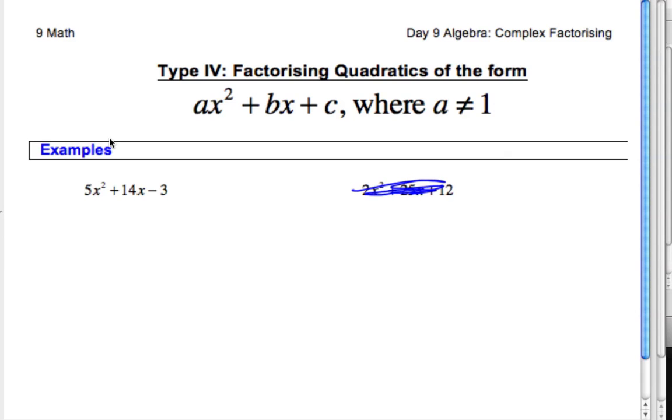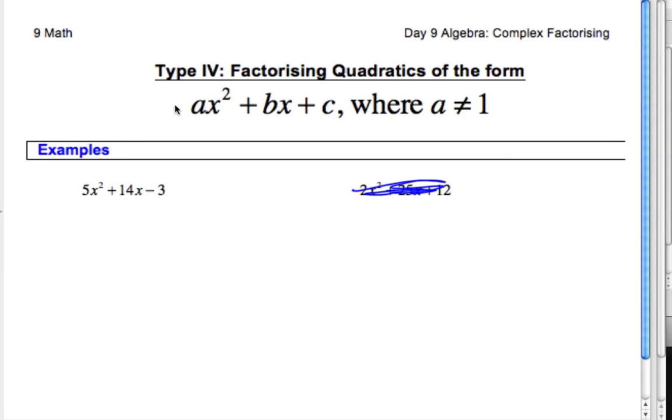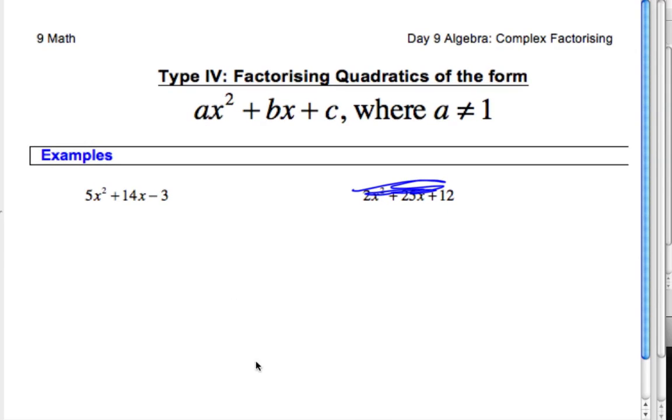Okay, so now we are factoring quadratics where this a value is no longer 1. And so when we have that process it just got a whole bunch harder and we have to recognize that fact. We've also got ones where there's no common factors or maybe there's not common factors for these. Right, so the first thing we should always do is look for common factors and the answer to this, there are no common factors.